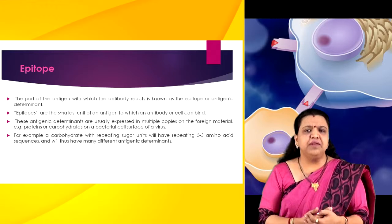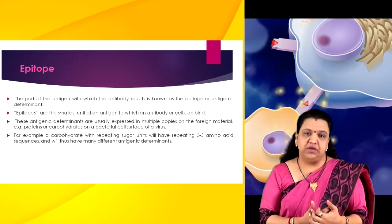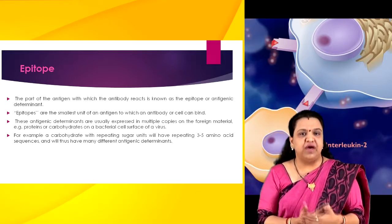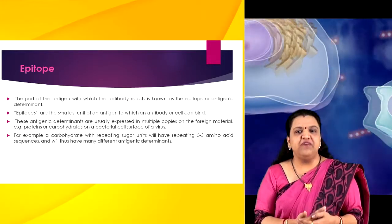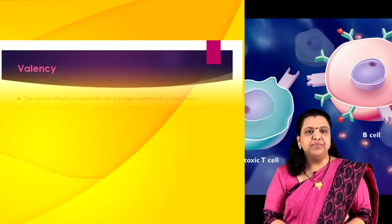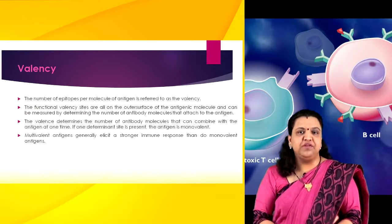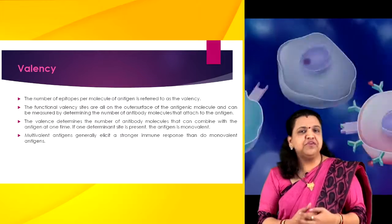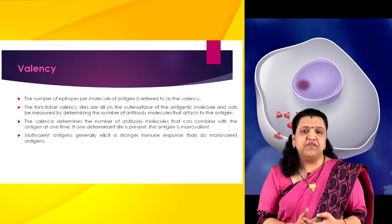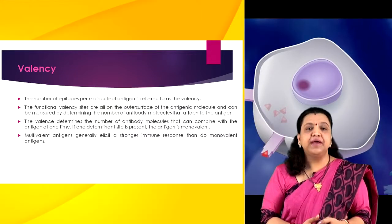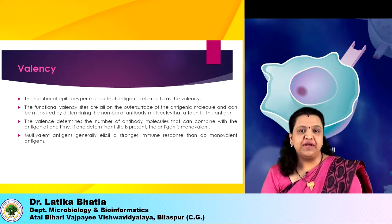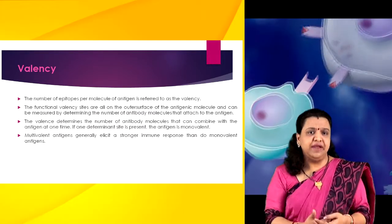For a protein, an antibody binds to a unit which is about 3 to 6 amino acids, while for a carbohydrate it is about 5 to 6 sugar residues. Therefore, most large molecules possess many antigenic determinants per molecule — that is, they are multi-determinant. However, these determinants may be identical or different from each other on the same molecule. For example, a carbohydrate with repeating sugar units will have many different antigenic determinants. Valency plays a very important role in antigenic property. The number of epitopes per molecule of an antigen is referred to as its valency. The functional valency sites are all on the outer surface of the antigenic molecules and can be measured by determining the number of antibody molecules that attach to the antigen. The valency determines the number of antibody molecules that can combine with an antigen at one time.